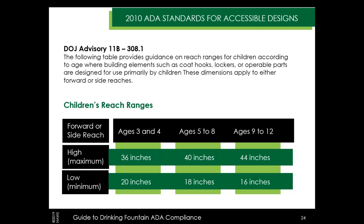Children's reach ranges are based on age ranges — remember children are defined as ages 12 and under in the ADA. Ages 3 to 4 have a high-low reach range of 36 to 20 inches; ages 5 to 8 have 40 to 18 inches; and ages 9 to 12 have 44 to 16 inches. Ages over 12 are expected to utilize adult height drinking fountains. You'll typically find children's fountains in school systems and daycare facilities. In public, the expectation is that an adult is present to assist the child.